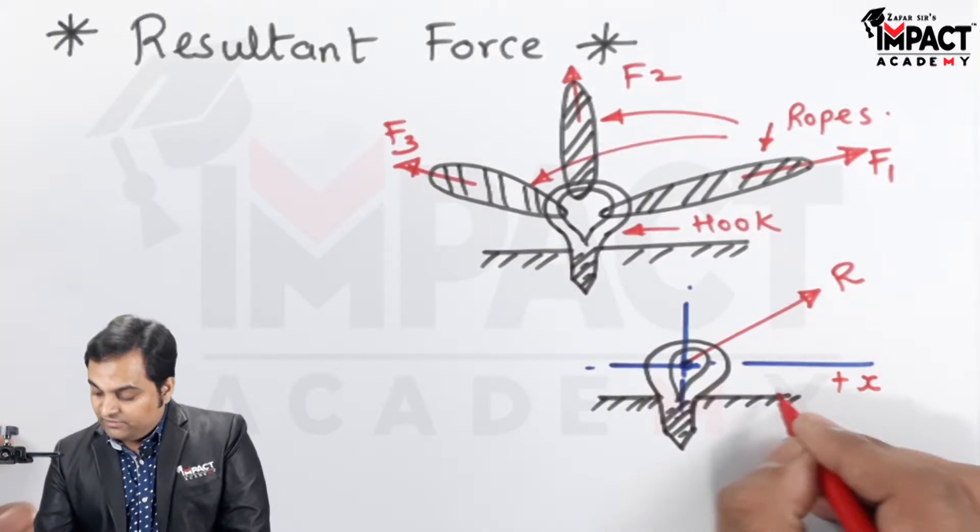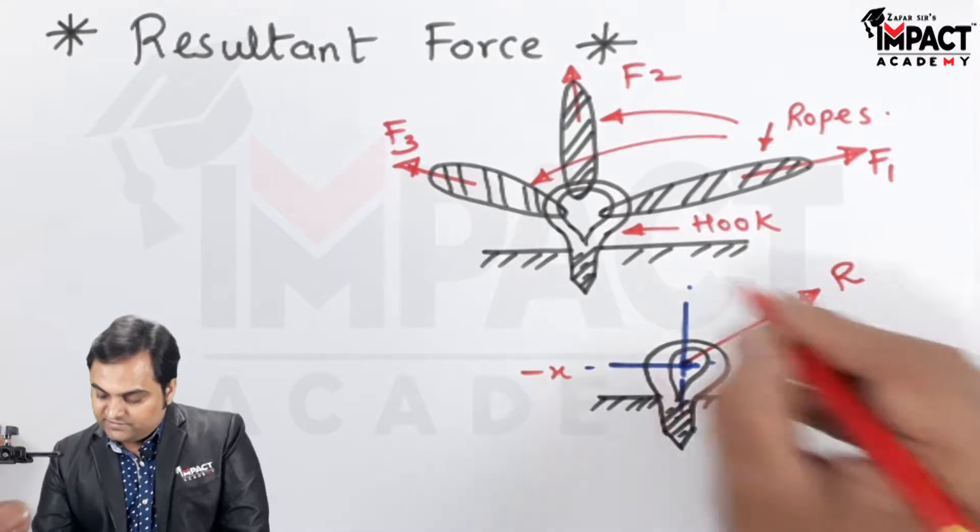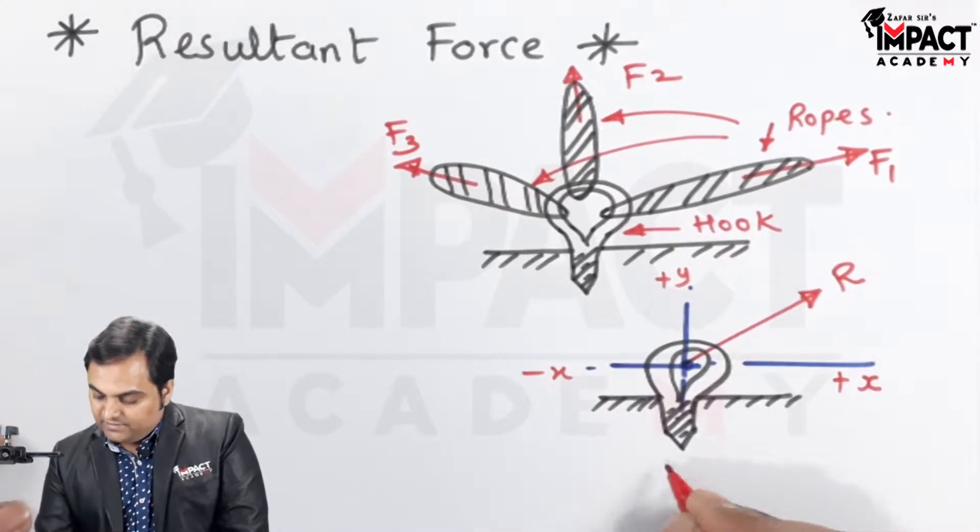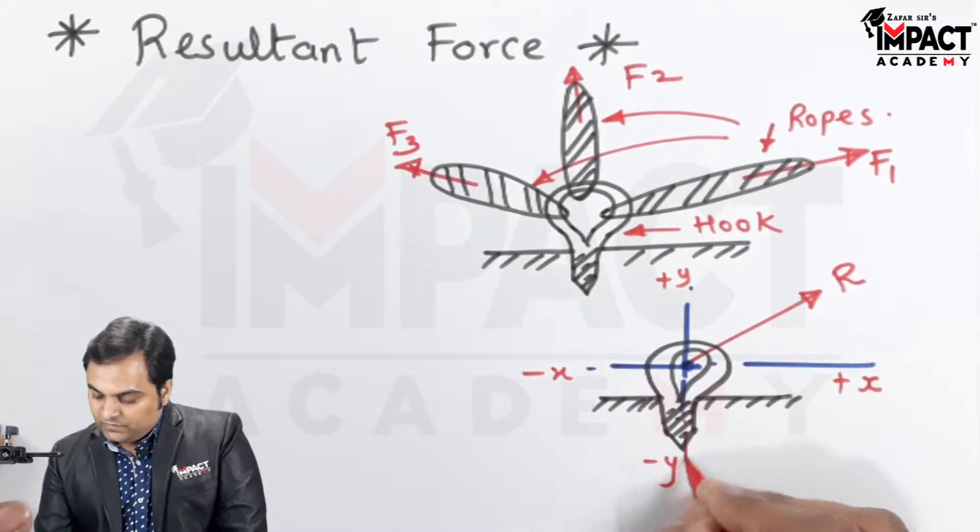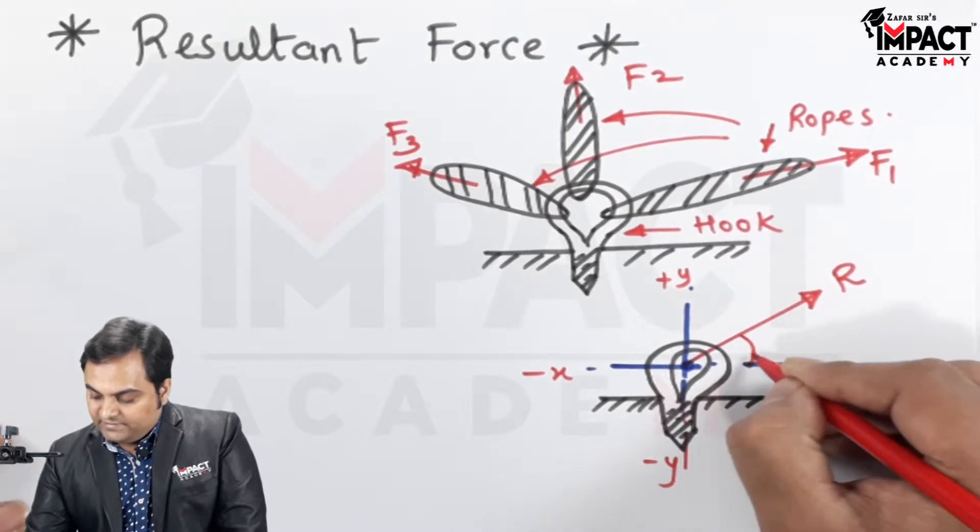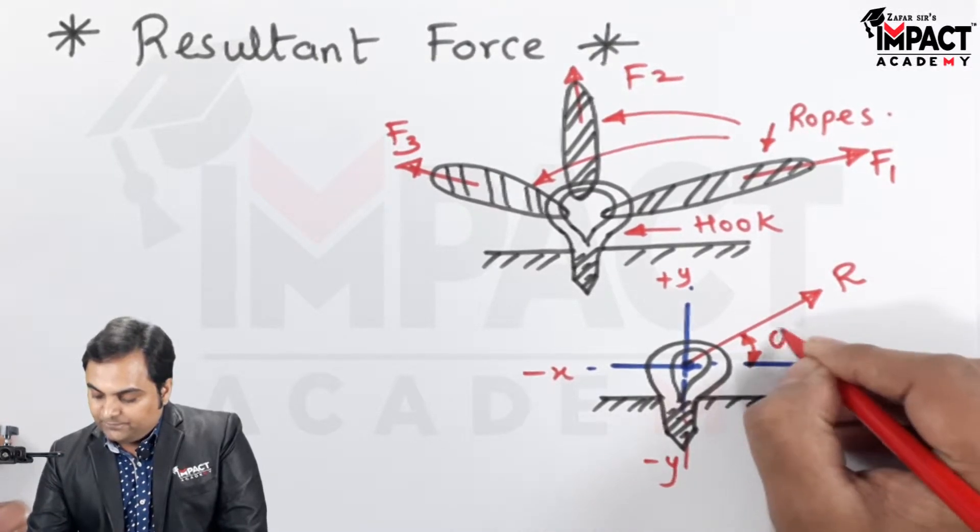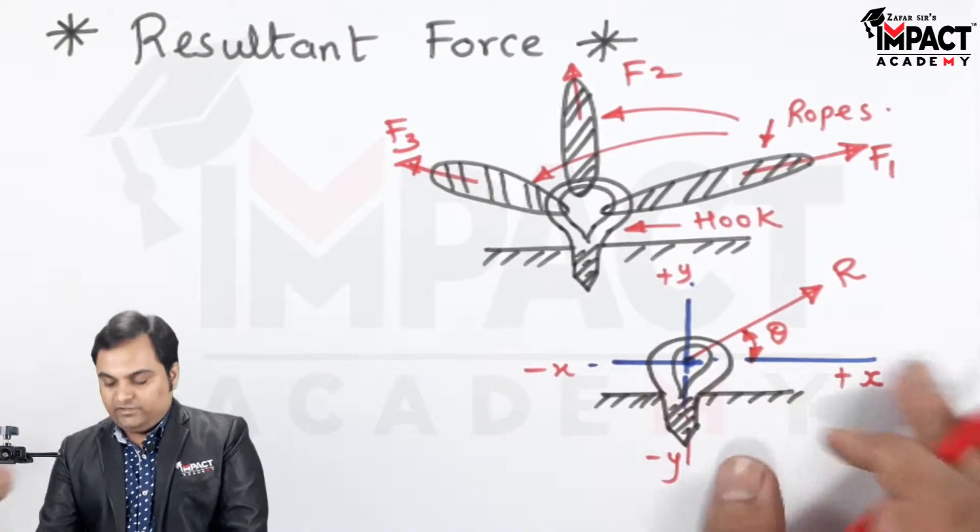If we see here, take it as plus x and here is minus x. This is plus y and minus y axis. So the resultant would be acting at an angle of theta with the horizontal in the first quadrant.